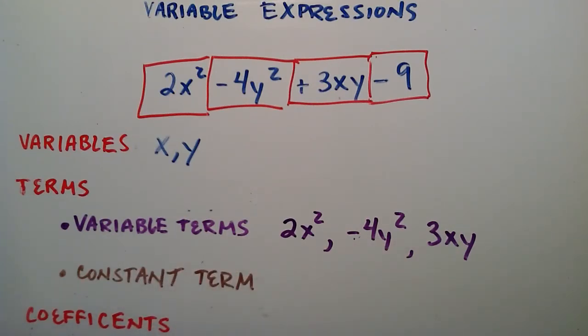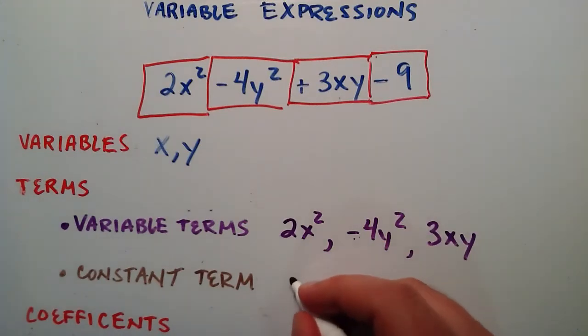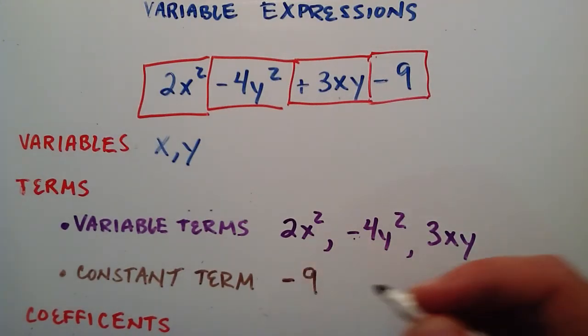Our constant term is going to be a term that isn't attached to any variable. In our case, we have one constant term, and that's the number negative 9.